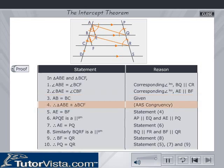Therefore, by AAS congruency, triangle ABE is congruent to triangle BCF. Hence, APQE is a parallelogram. Therefore, AE is equal to PQ.